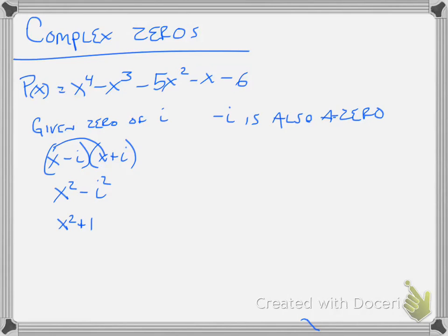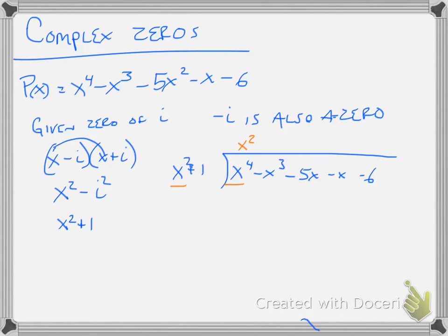So because I have that, what I can do now is take this quartic. I don't have any missing terms, and I'm going to divide it by x squared plus 1. Looking at the first two terms, x squared times x squared becomes x to the fourth. I multiply it back through — that becomes x squared — and I write that under that term. So I have x to the fourth plus x squared, and then I subtract.